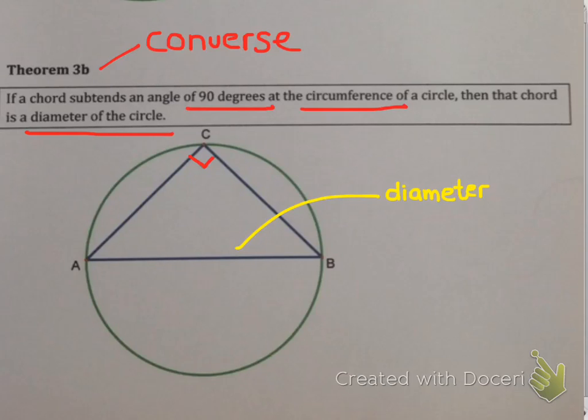They're giving you the 90 degrees, and then you are allowed to assume that that random chord is in fact a diameter. So the circle will be somewhere on that line. The circle center, sorry, will be somewhere on that line.